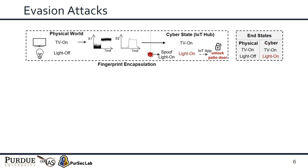We identified three evasion attacks against event verification systems. First, if an event's influence on sensor measurements satisfies the fingerprint of another event, the adversary can conduct a spoofing attack when the other event physically occurs. For example, the EVS extracts that the TV-on event influences a sound sensor and illuminance sensor, and the light-on event similarly influences the illuminance sensor. At runtime, when TV-on physically occurs, the adversary spoofs the light-on event. Since the sensor measures the TV-on influence, the EVS cannot detect the attack, and the adversary successfully spoofs the light-on event.